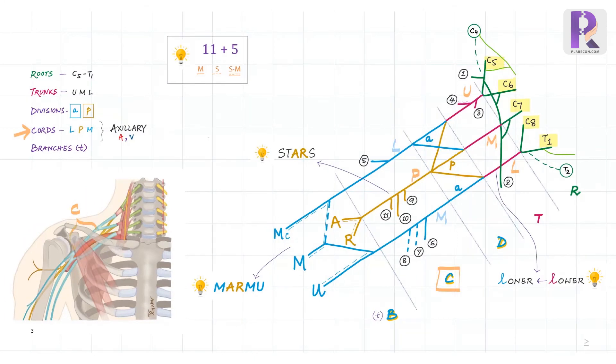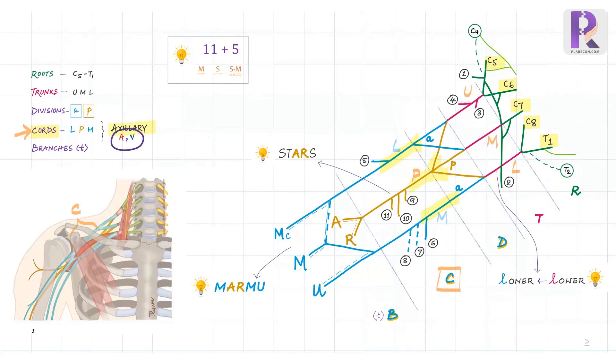We just saw how the fourth part, that is the cords, are formed from the divisions. They lie in the infraclavicular portion, just posterior to the pectoralis minor muscle. In this part, they are named so based on their relation to the axillary artery. So here we can see the axillary artery in the center, the vein is just medial to it, the lateral cord is lateral to the axillary artery, the medial cord medial to it, and the posterior cord, posterior to it.